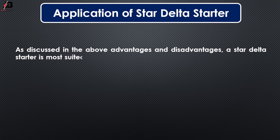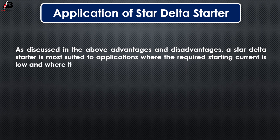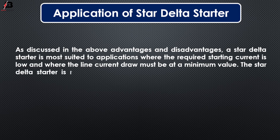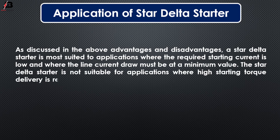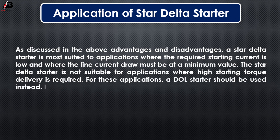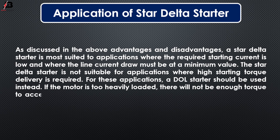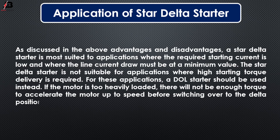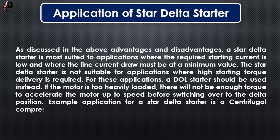Applications of star delta starter: As discussed in the advantages and disadvantages, a star delta starter is most suited to applications where the required starting current is low and where the line current draw must be at a minimum value. The star delta starter is not suitable for applications where high starting torque is required. For these applications, a DOL starter should be used instead. If the motor is too heavily loaded, there will not be enough torque to accelerate the motor up to speed before switching over to the delta position. An example application for a star delta starter is a centrifugal compressor.